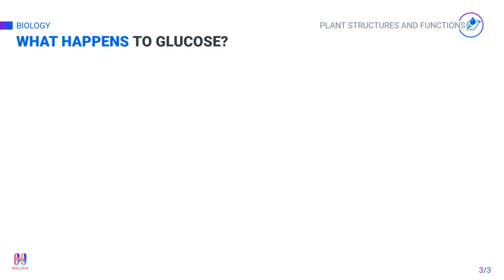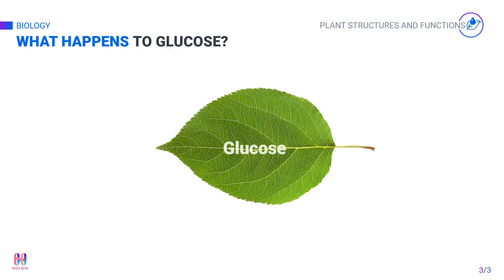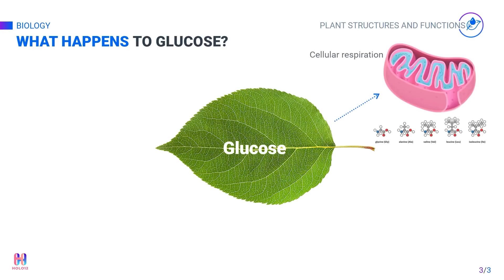What happens to glucose? The purpose of photosynthesis is to make glucose. So what happens to the glucose at the end of photosynthesis? Firstly, glucose is used as a reactant in cellular respiration. Both aerobic and anaerobic respiration break down glucose through a series of chemical reactions that release energy for the cell to use to power all its processes.